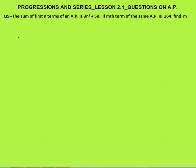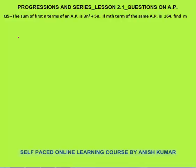Question 5: the sum of first n terms of an AP is Sₙ = 3n² + 5n. If the mth term of the AP is 164, find the value of m. First try to solve this yourself. Apply common sense: S₁ means the sum of one term, which equals the first term a.